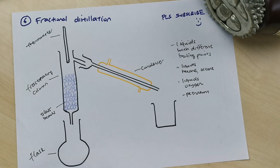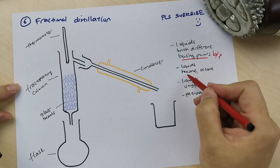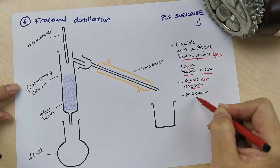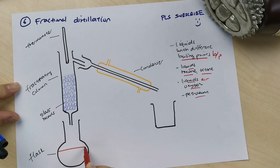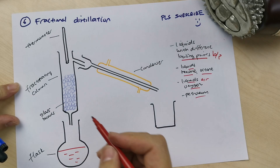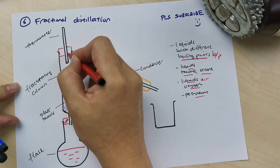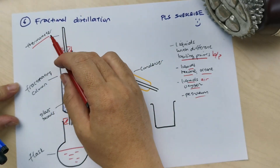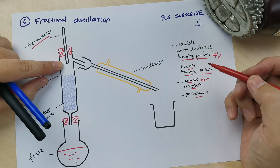Fractional distillation involves a bit more apparatus. It is always used for liquids with different boiling points — very common in the exam. Common examples are hexane and octane, oxygen from liquid air, or petroleum. You pour the liquid mixture in and heat it up. Because the components have different boiling points, the one with the lower boiling point — hexane — comes up first. Notice that for fractional distillation, there is a thermometer.